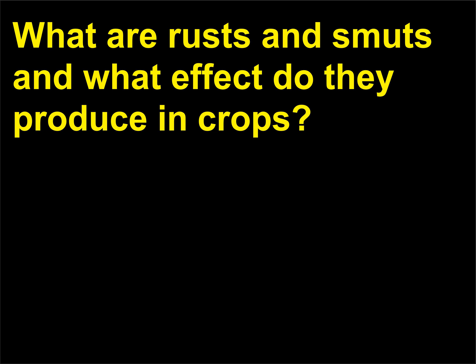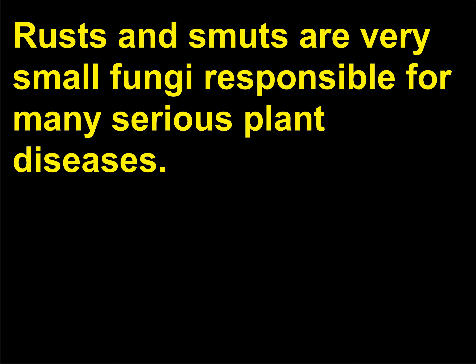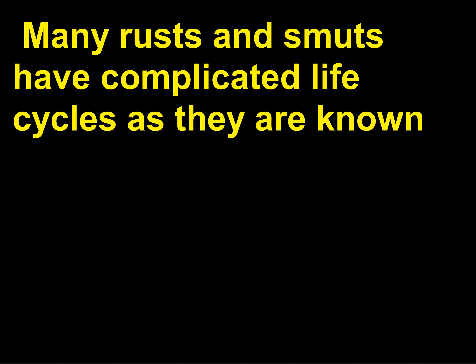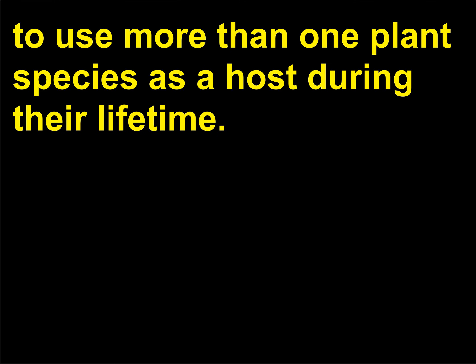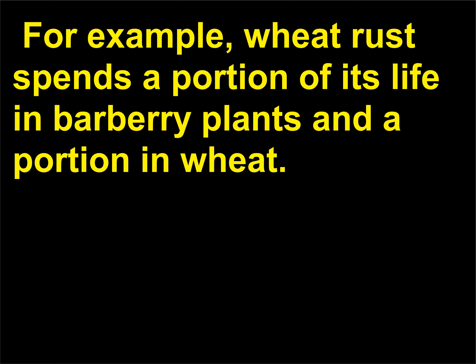What are rusts and smuts and what effect do they produce in crops? Rusts and smuts are very small fungi responsible for many serious plant diseases. Cereals and other grains are highly susceptible to attack by rusts and smuts. Many rusts and smuts have complicated life cycles, as they are known to use more than one plant species as a host during their lifetime. For example, wheat rust spends a portion of its life in barberry plants and a portion in wheat.